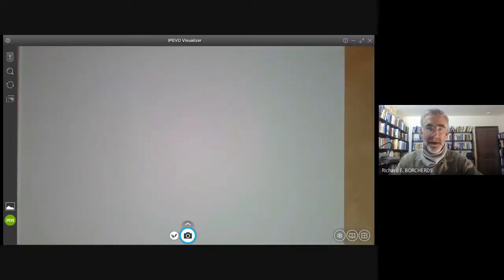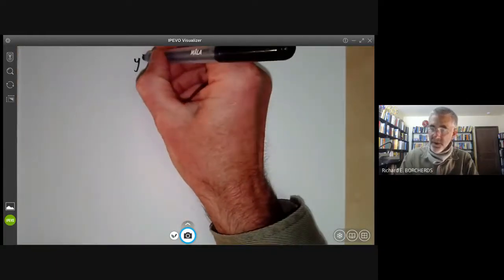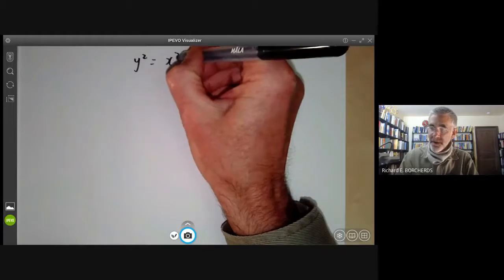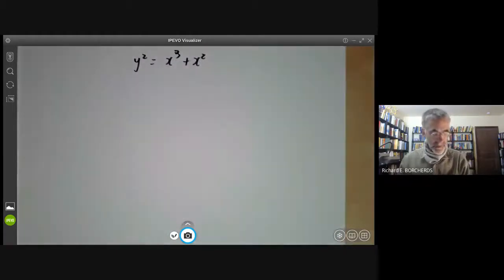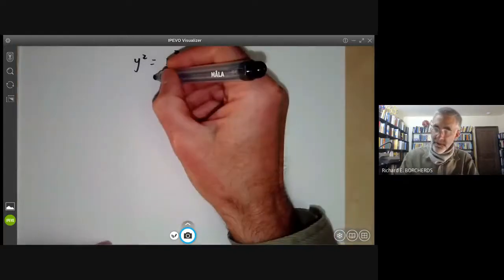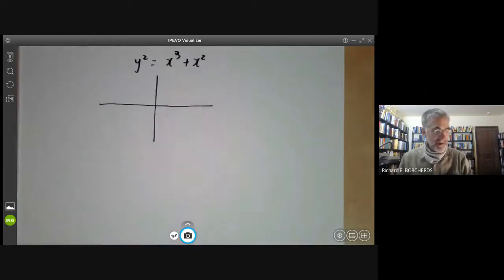So this is the second part of the first lecture in which we will discuss some cubic curves. The first cubic curve we will discuss is the curve y squared equals x cubed plus x squared. If we draw a picture of it, it looks something like this.